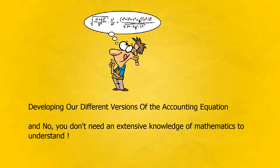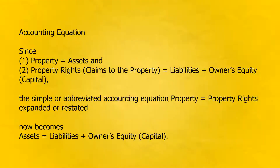Developing our different versions of the accounting equation — and no, you don't need an extensive knowledge of mathematics to understand. Since: one, property equals assets, and two, property rights — claims to the property — equals liabilities plus owner's equity capital, the simple or abbreviated accounting equation — property equals property rights — expanded now becomes: assets equals liabilities plus owner's equity capital.